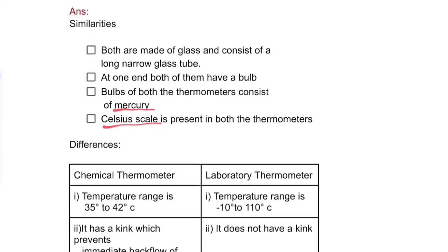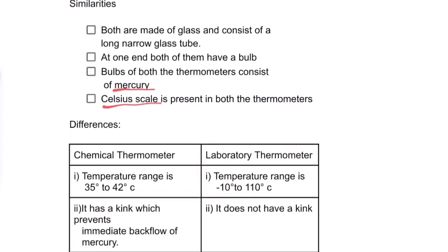Differences between the clinical thermometer and the laboratory thermometer: the clinical thermometer's temperature range is 35 to 42 degrees Celsius, while the laboratory thermometer's range is 10 to 110 degrees Celsius. The clinical thermometer has a kink which prevents immediate backflow of mercury, but the laboratory thermometer does not have a kink.